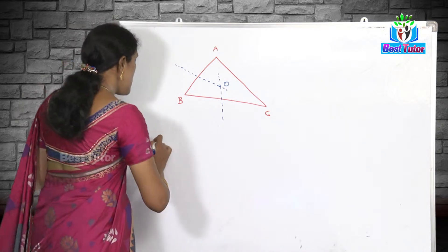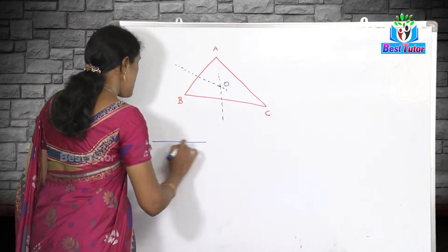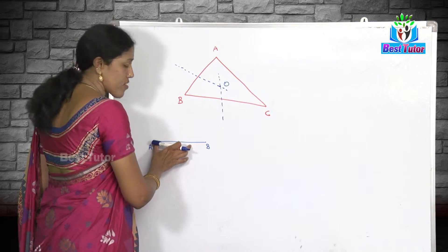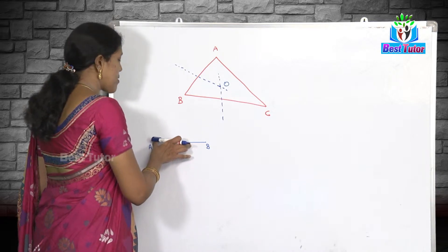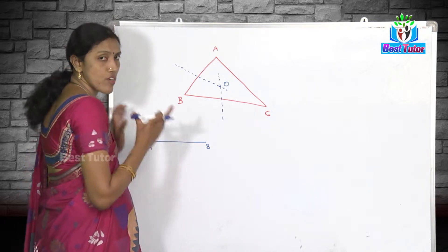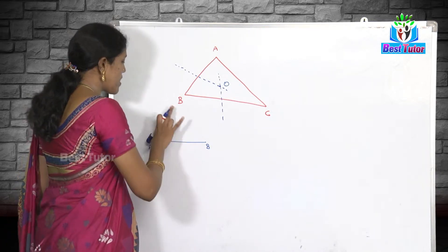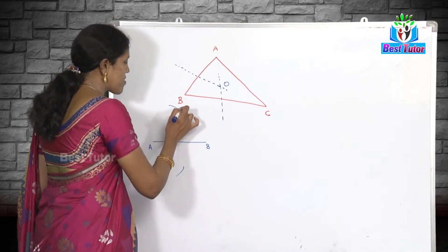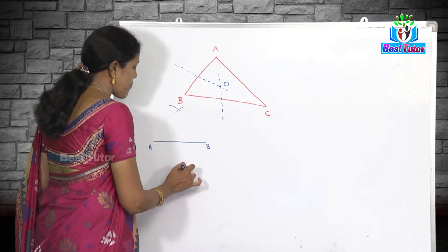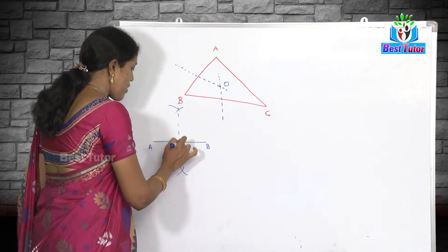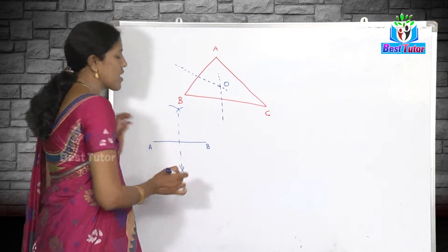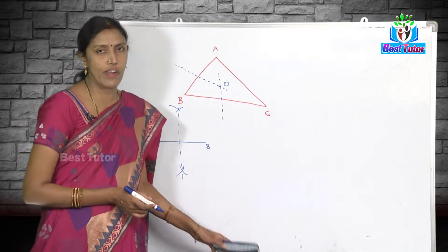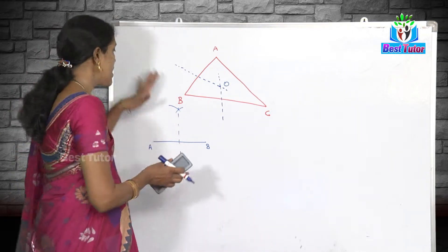How do we construct a perpendicular bisector of a given line segment? If line segment AB is given, we take a radius more than half of AB, put the compass at A and draw an arc above and below. Similarly, with the same radius from B, we draw arcs and join the intersections to get the perpendicular bisector.